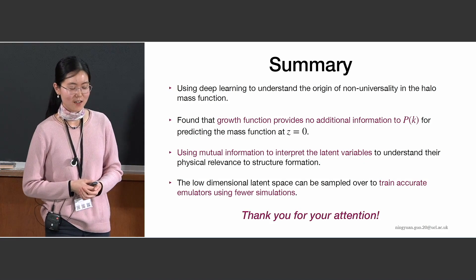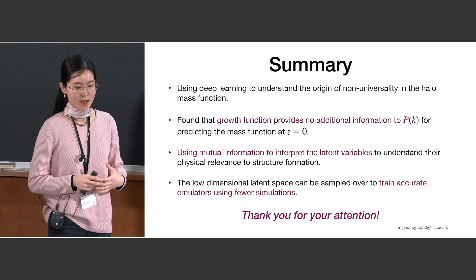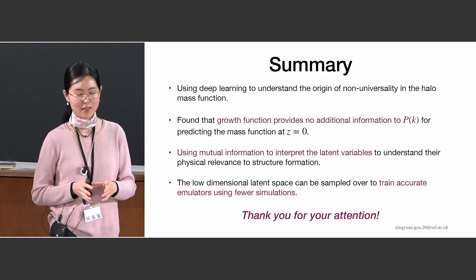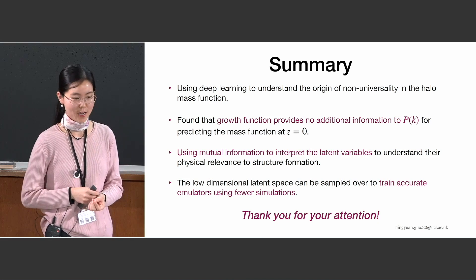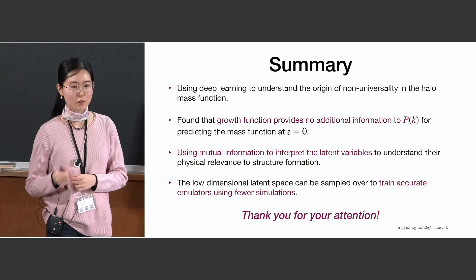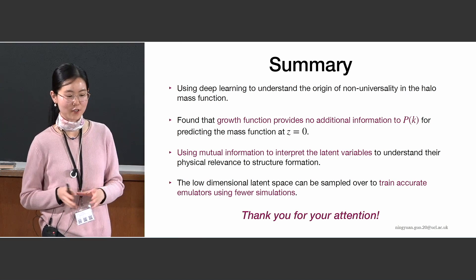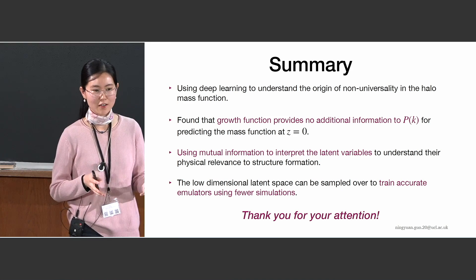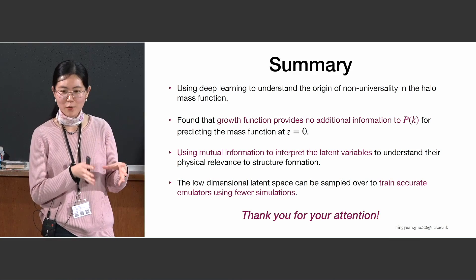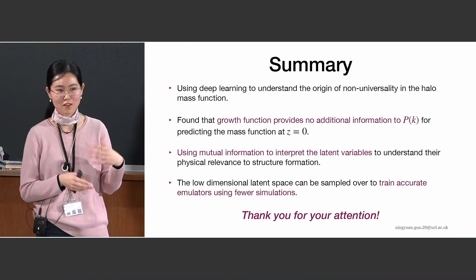To summarize, we are using deep learning to understand what is causing the non-universality in the halo mass function. This is enabled through a model that learns a compact and disentangled latent representation of all the information needed to predict the halo mass function, which we then interpret using mutual information. The low-dimensional latent space also has other uses — for example, instead of designing emulators to cover the full seven-dimensional cosmological parameter space, you can design them to cover this low 3D-dimensional space, training accurate emulators using a fewer number of simulations.